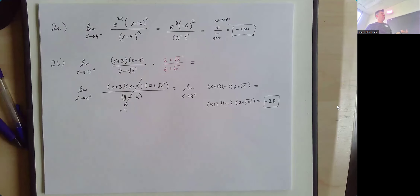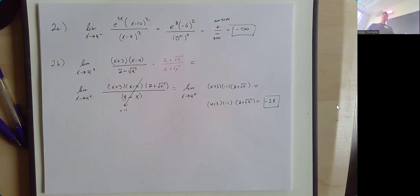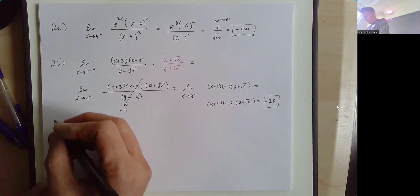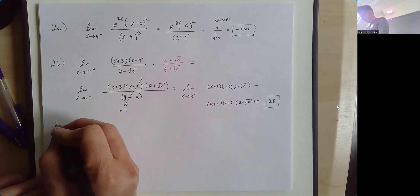Interestingly, it doesn't really matter whether this was approaching 4 from the right or from the left — we could have done this limit approaching from the left and gotten the same answer, negative 28.